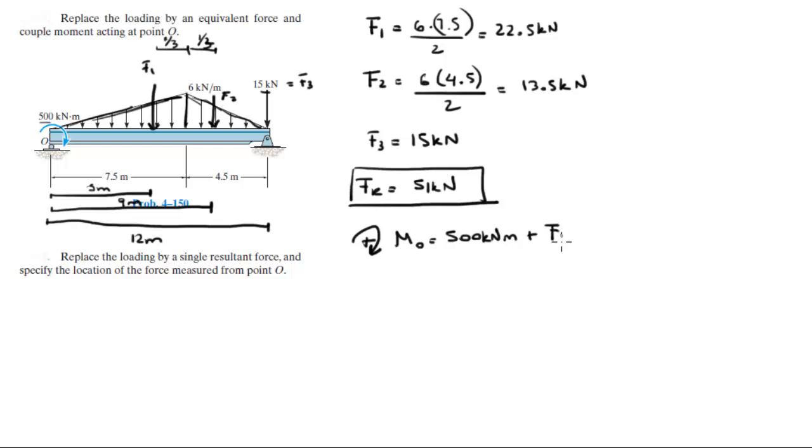Which is F1 times the distance, which is 5. Plus F2 is turning the 9 meter lever arm.